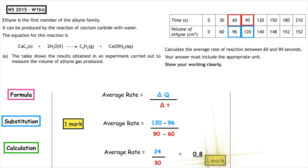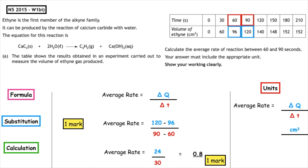The last mark is for the appropriate units. We write out our formula: average rate is equal to change in quantity over change in time. The quantity is measured in centimetres cubed and our time is seconds. So we can rewrite that as centimetres cubed s to the minus 1.